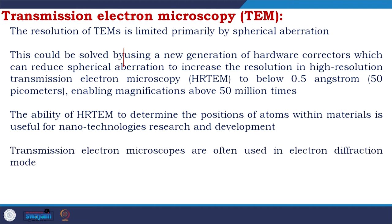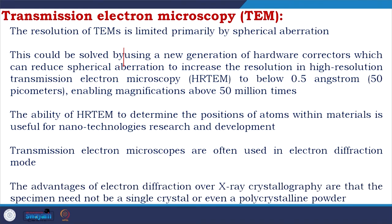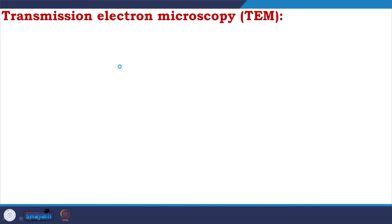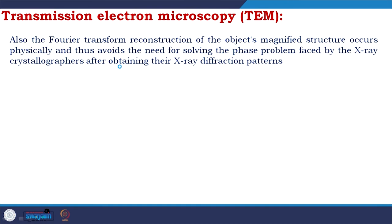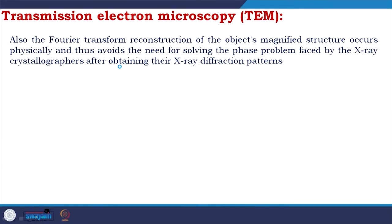TEM is often used in electron diffraction mode. The advantages over X-ray crystallography include that the specimen need not be a single crystal or even a polycrystalline powder. Also, the Fourier transform reconstruction of the object's magnified structure occurs physically, avoiding the need to solve the phase problem that X-ray crystallographers face after obtaining their diffraction patterns.